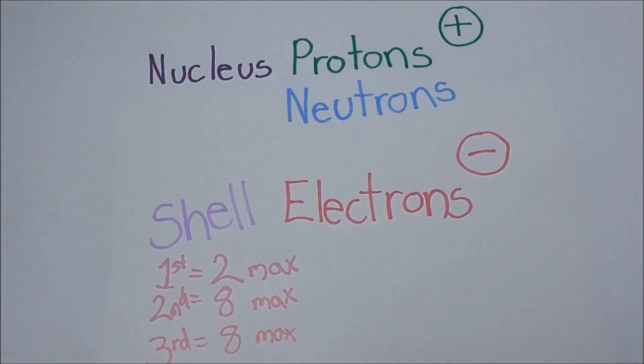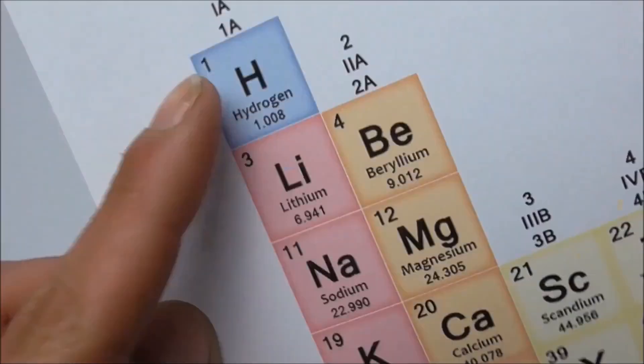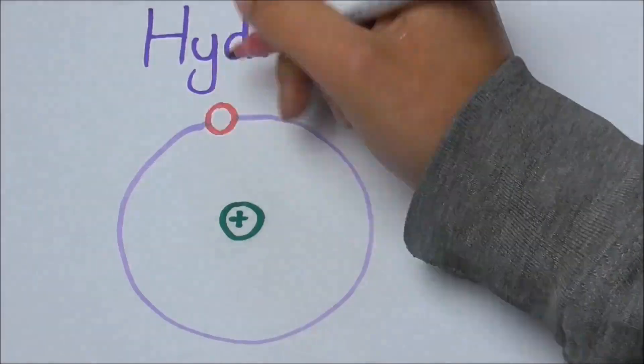All right, first we'll do hydrogen. So at the top it's number one, and it's because it's got one proton as its nucleus and one electron in its outer shell.